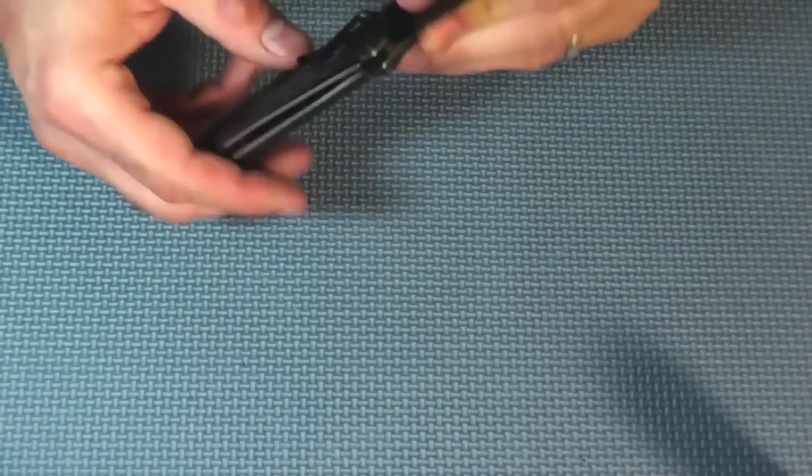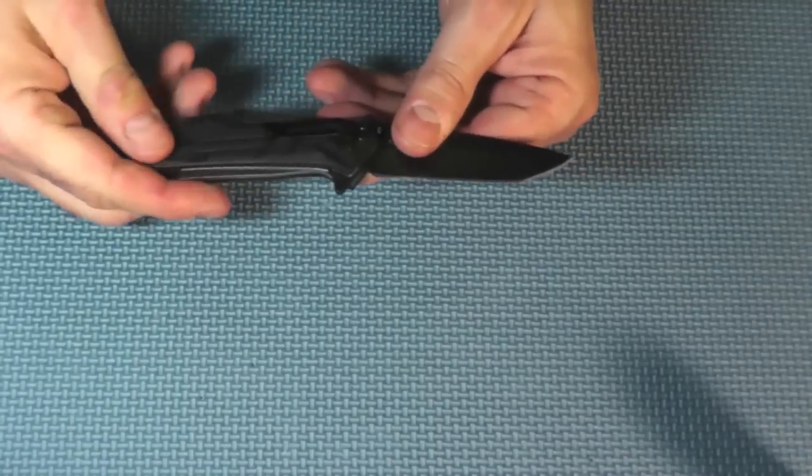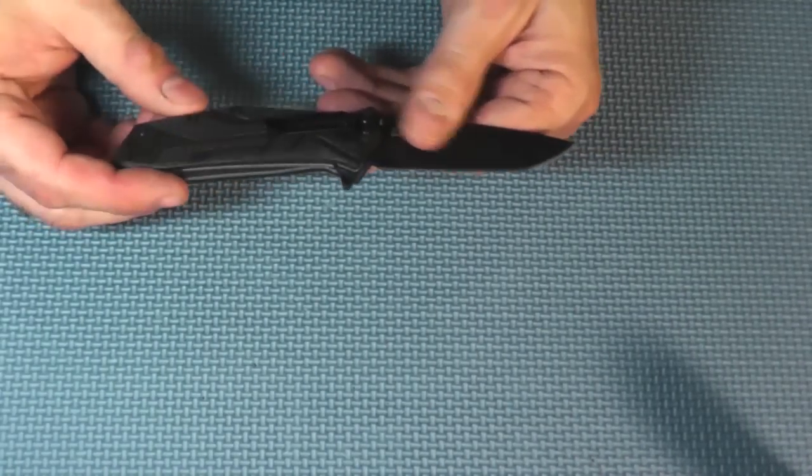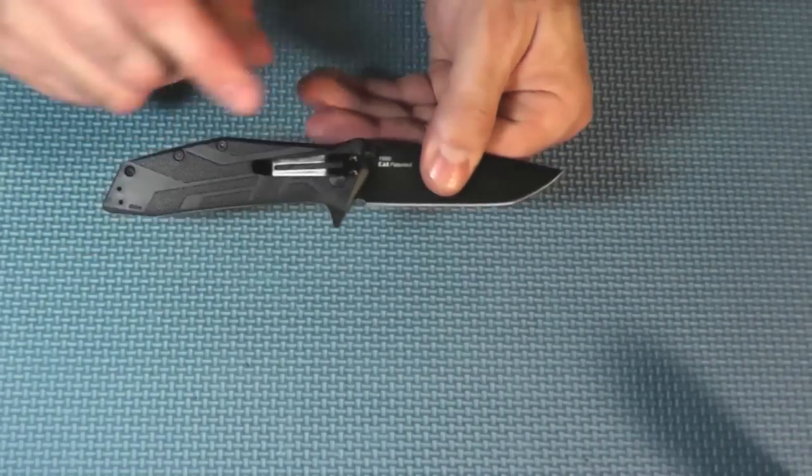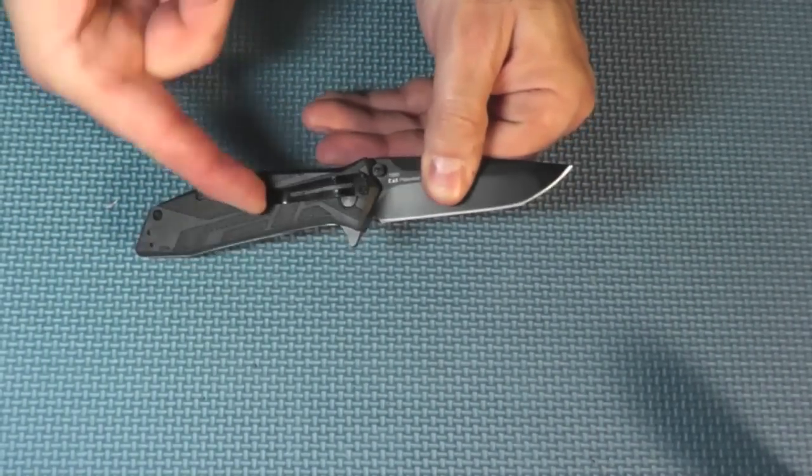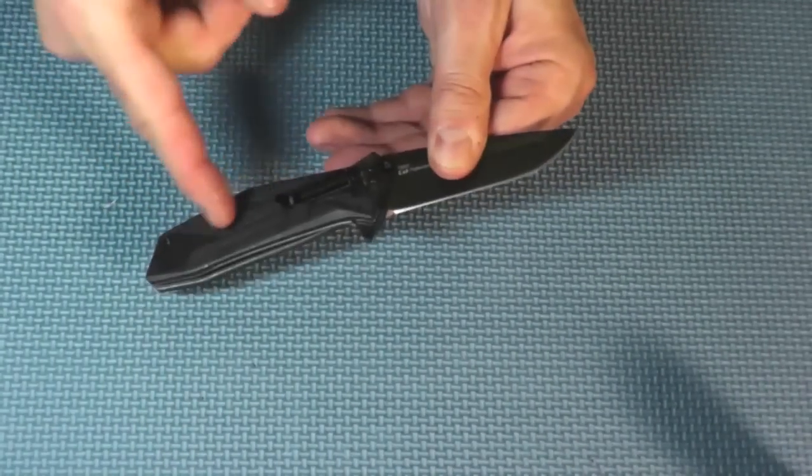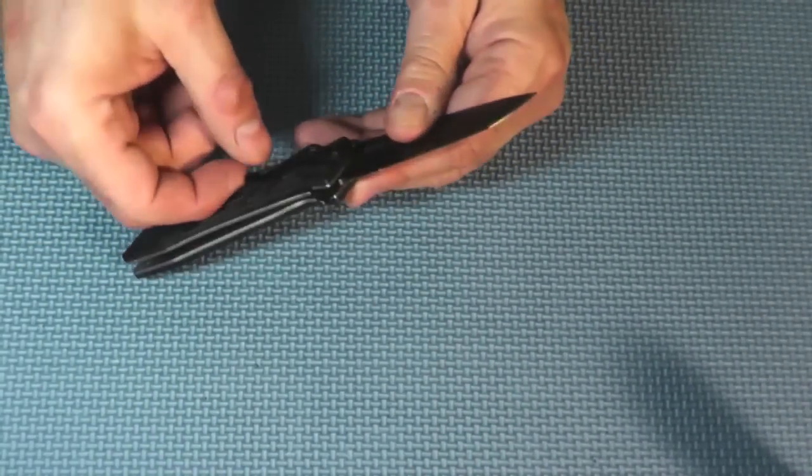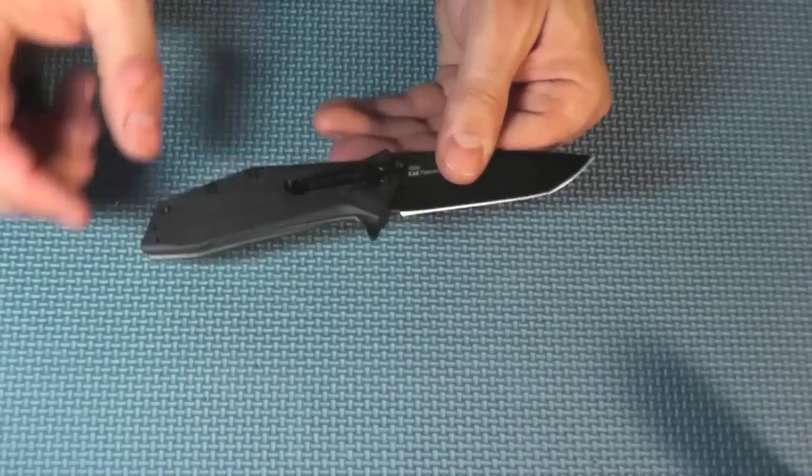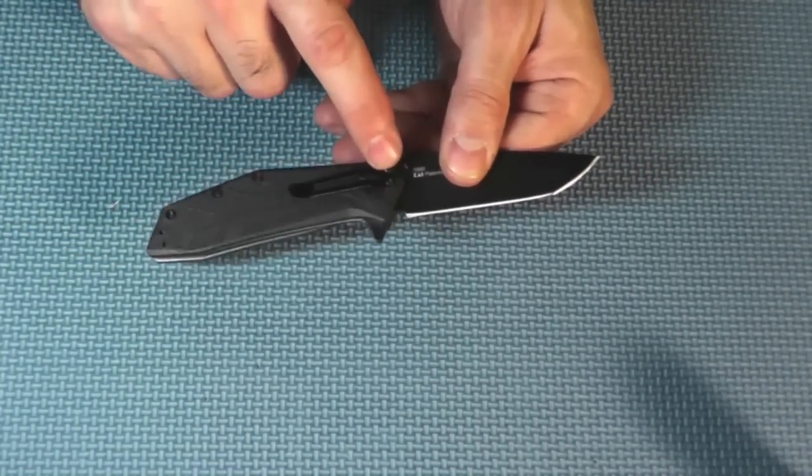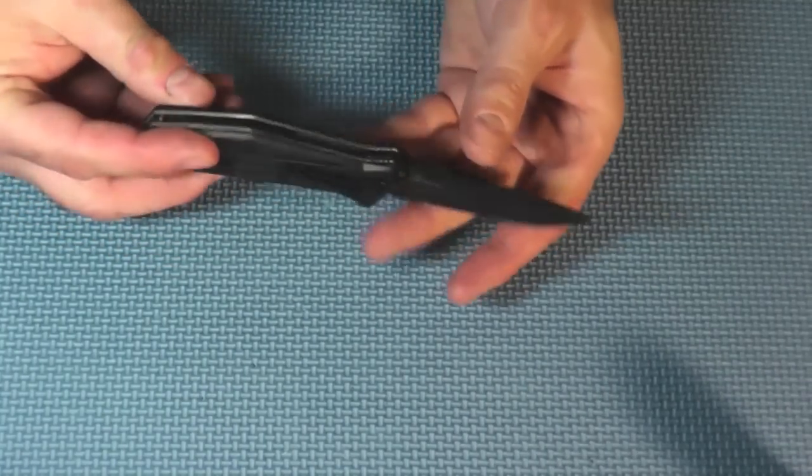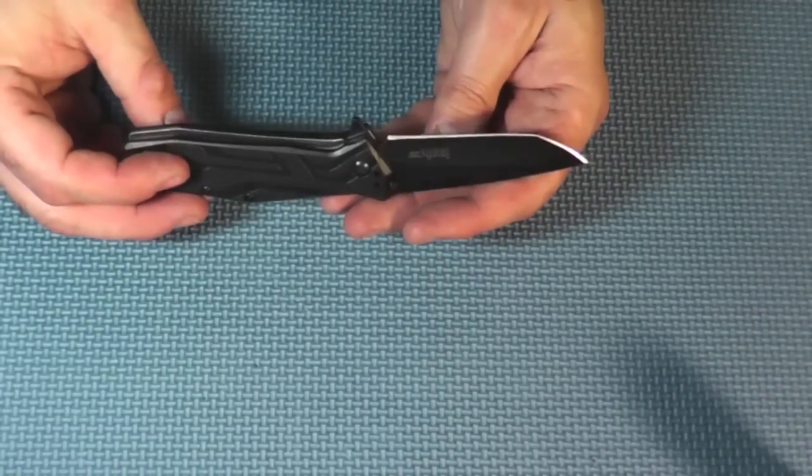Now, I did point out that this is a liner lock. And, you can see it does have steel liners. The steel liners are covered up by these really nice scales. These scales are GRN, which is glass-filled nylon. Now, you can see we have a very small clip here, but it's very tight. It might be kind of hard to put on, you know, thick jeans. Just be aware of that. But, you can mount this clip here, here, here, or here, which means left or right, tip up, tip down. And, everybody should be happy with that.